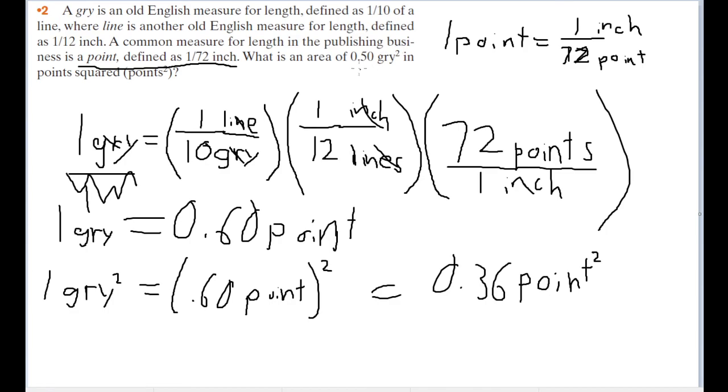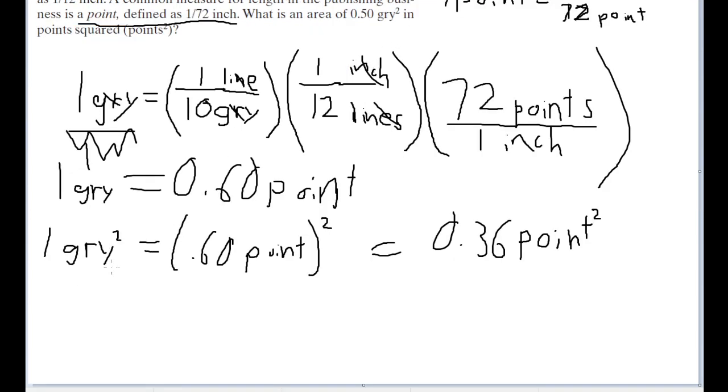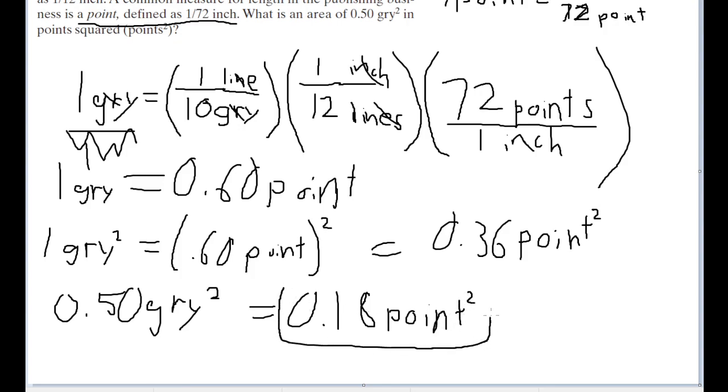So to get from 0.5 gris squared, we're basically dividing this in half. So that means that 0.5 gris squared, an area, and it's a good thing that we have units squared because that's how we know it's area, is going to be equal to 0.36 points squared divided by two, which is going to be 0.18 points squared. And that is the area.